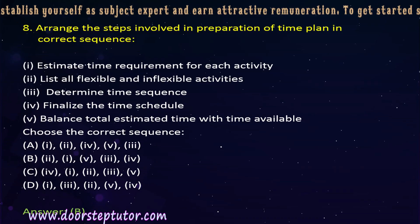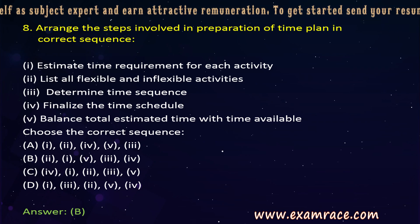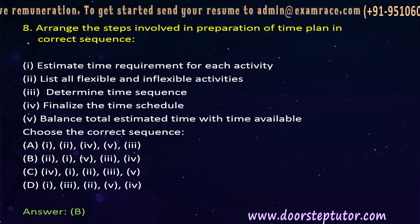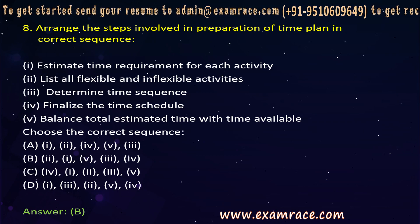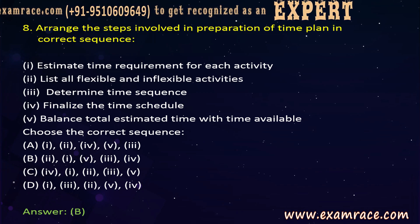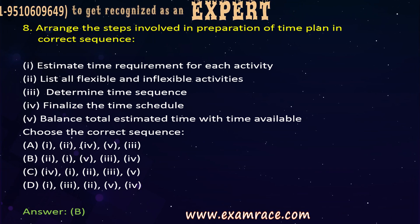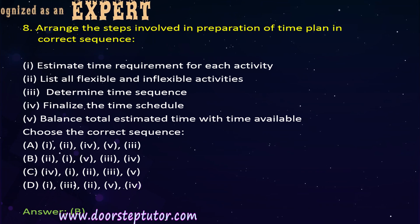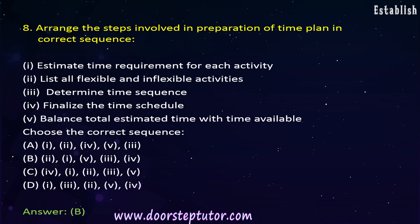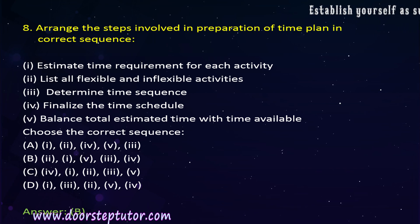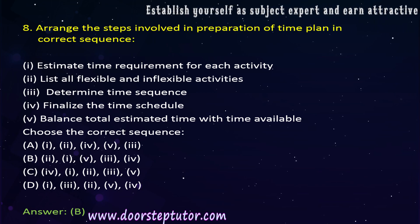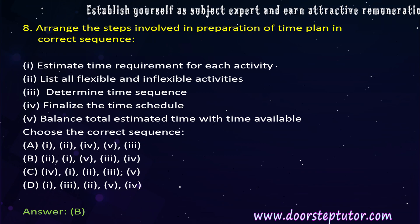The next question is: arrange the steps involved in the preparation of a time plan in the correct sequence. Time is considered one of the most valuable and intangible tools, so time management is very important. First, a list should be made including all flexible and inflexible activities. Then, the time required for each activity needs to be estimated. After that, a balance should be made between the total estimated time and the time actually available. Finally, the time sequence is determined and the schedule is finalized. The correct answer is B.